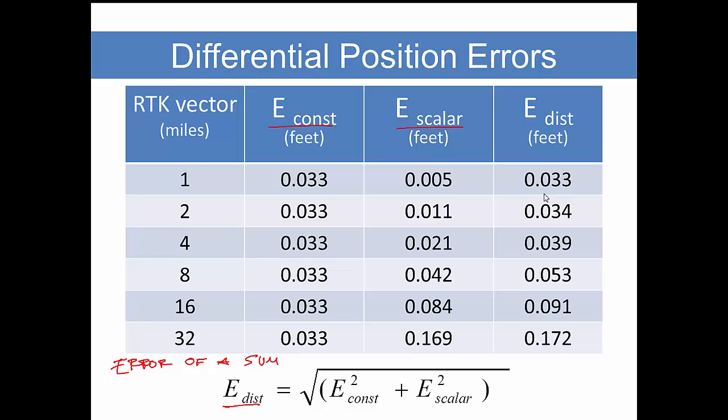Notice that at one mile the scalar error really has no effect, and even at two miles the effect is very small. It starts to show up at four miles. When you get out to eight miles, now it starts to become significant. Beyond 16 miles, for survey grade work, for certain types of survey grade work, this may not be acceptable errors.